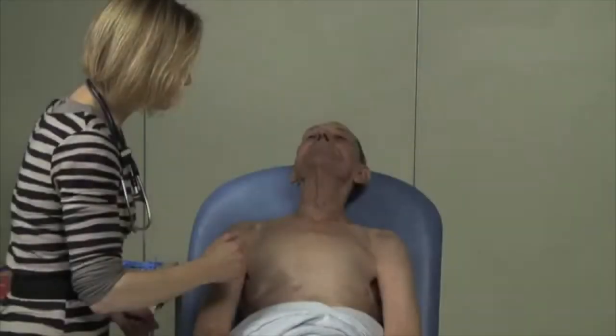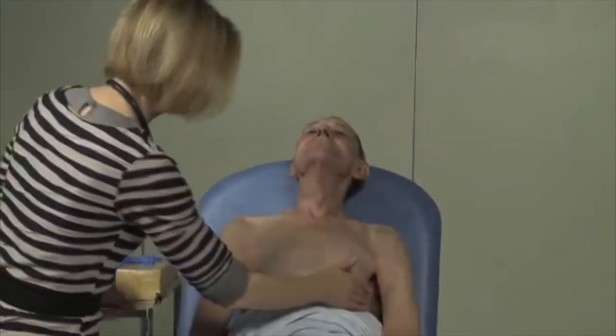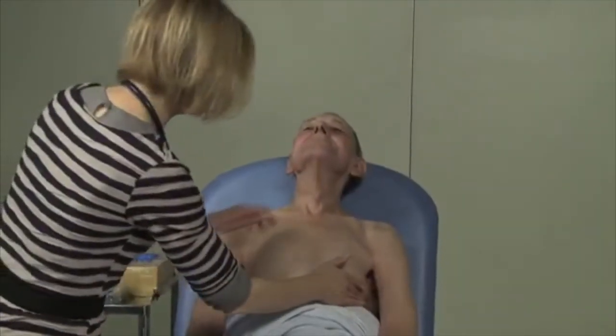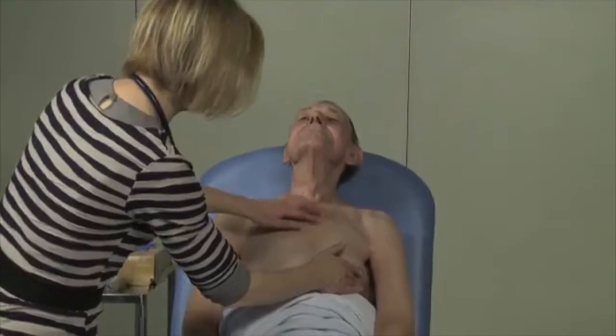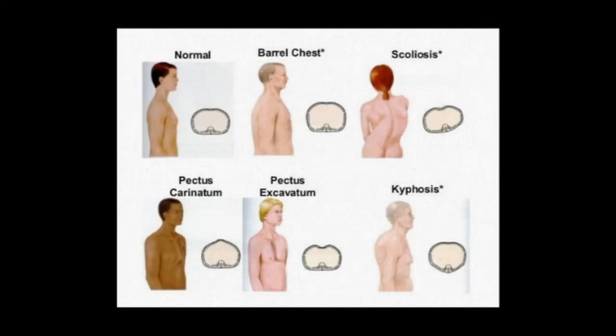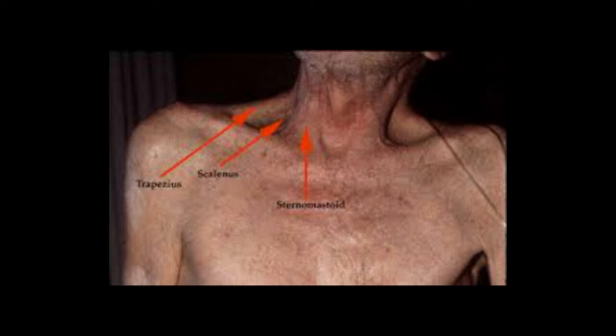Inspection of the chest. You are now looking for asymmetry, respiratory distress and scars. Also examine for chest wall deformity, for example barrel chest, pectus excavatum or kyphosis. Examine for use of accessory muscles.